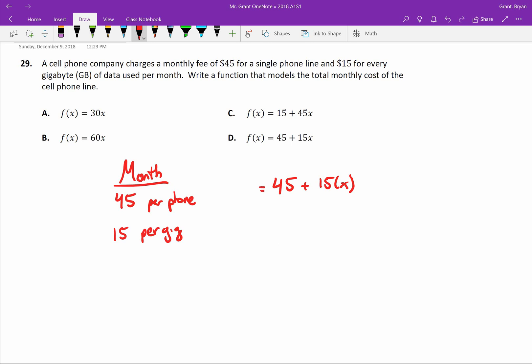And then when we do all that math, our answer is going to be the total cost. And it looks like in our equations here they used f(x) to be the total cost. So f(x) is going to be that forty-five dollars plus fifteen dollars times each gigabyte, and that matches D.